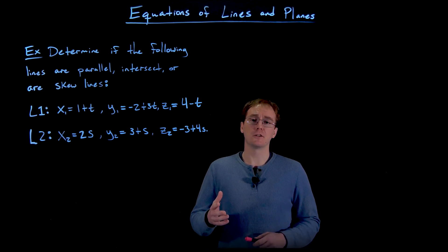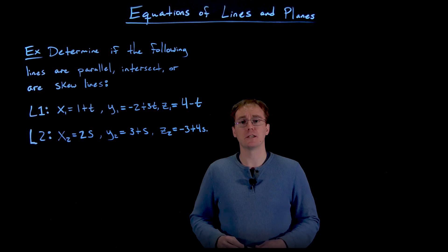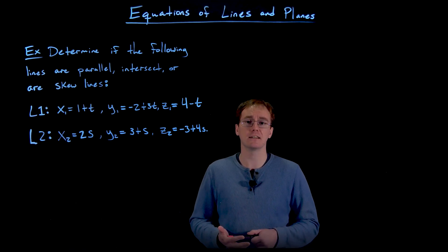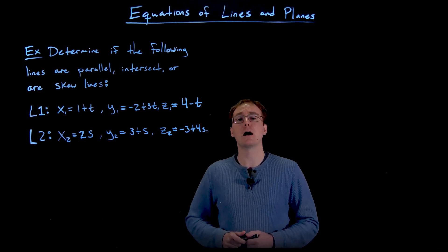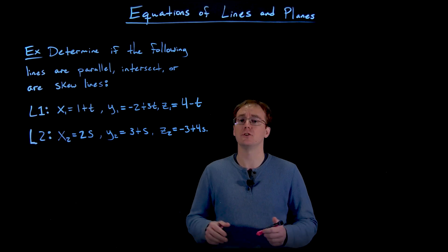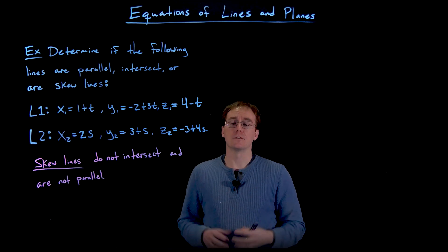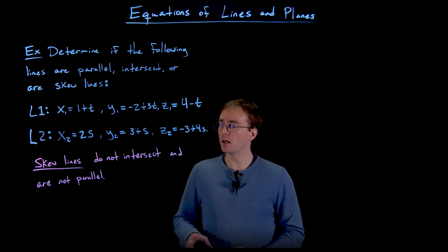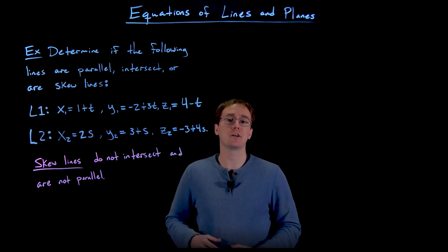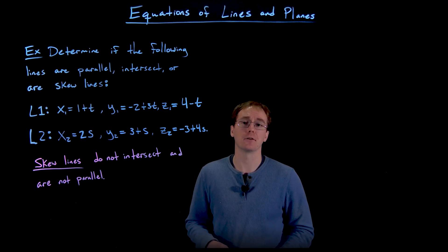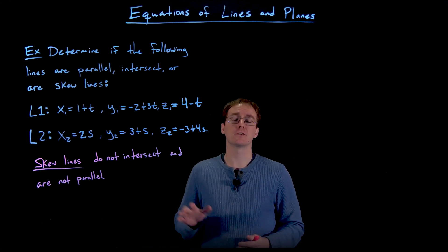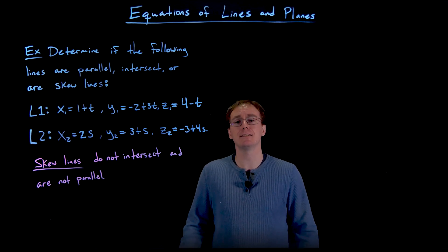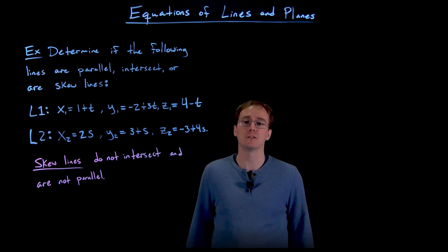In three-dimensional space we have some of those same situations — we could have parallel lines or intersecting lines — but now we can also have what we call skew lines. Skew lines are two lines that do not intersect and are not parallel. This is a situation that is impossible in two dimensions but is possible in three dimensions.